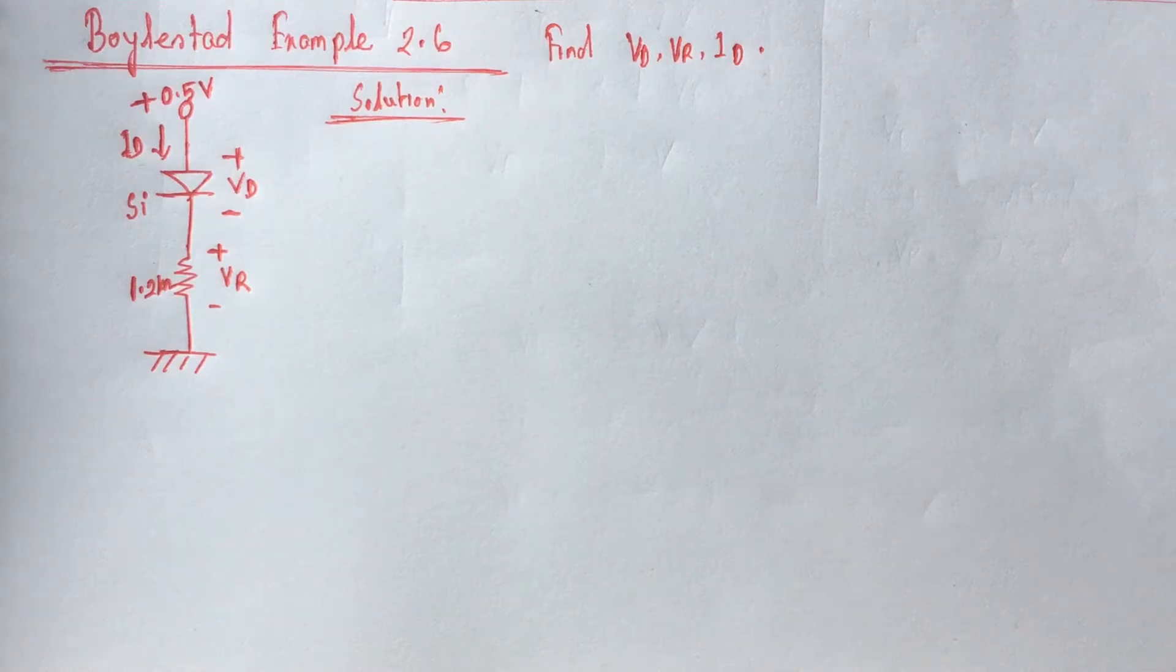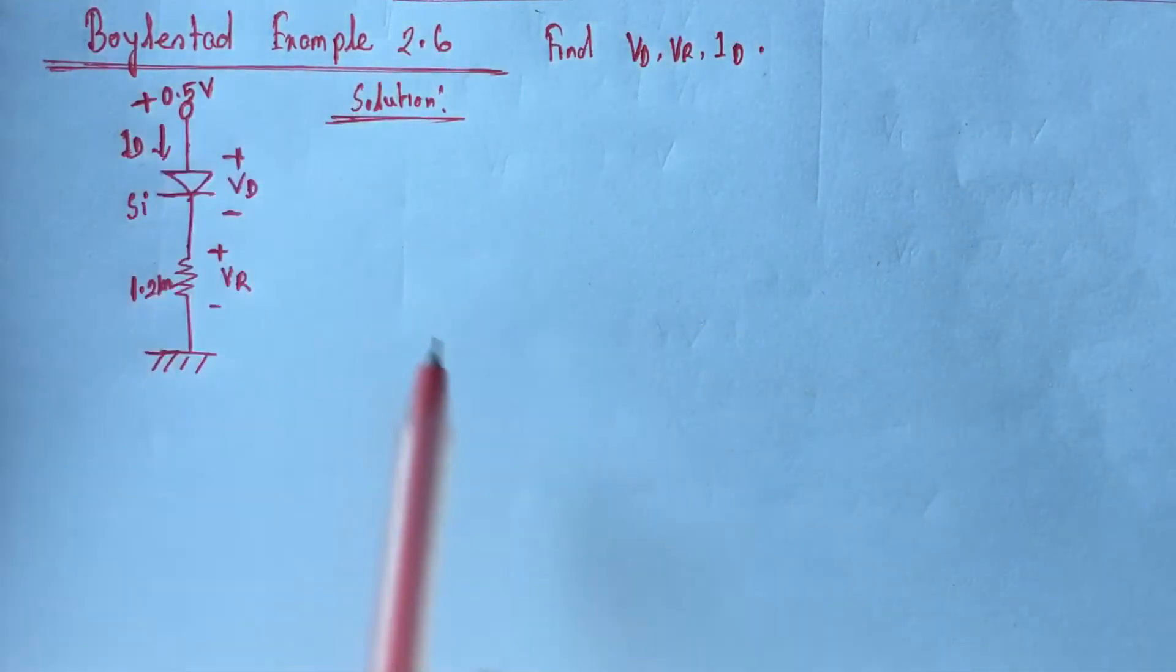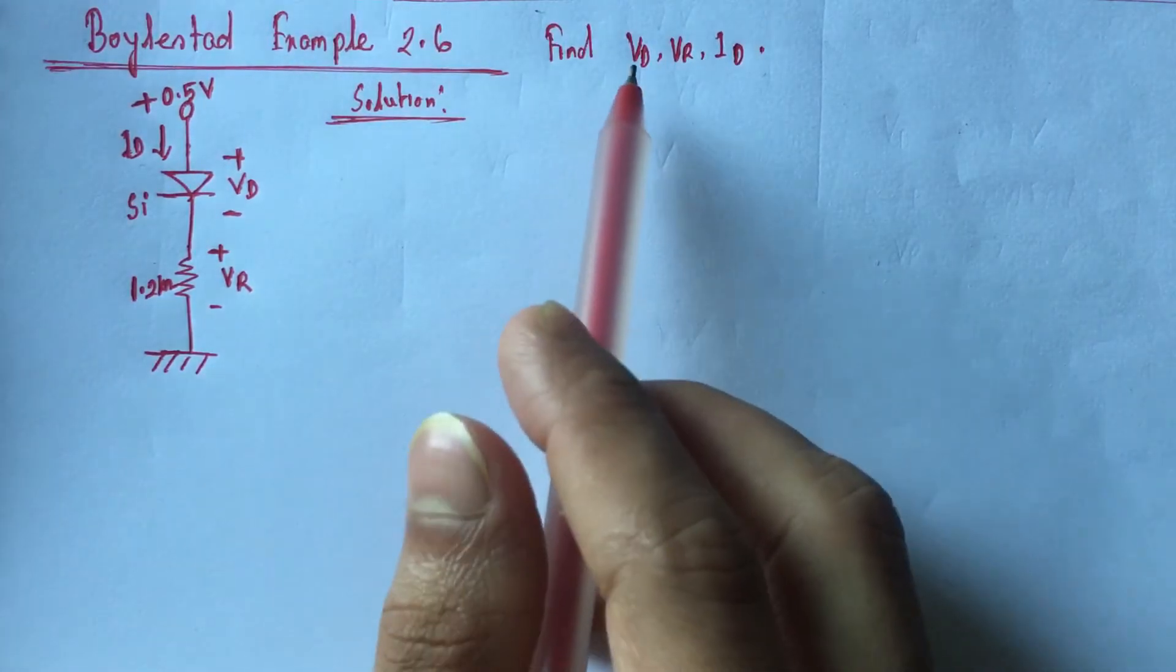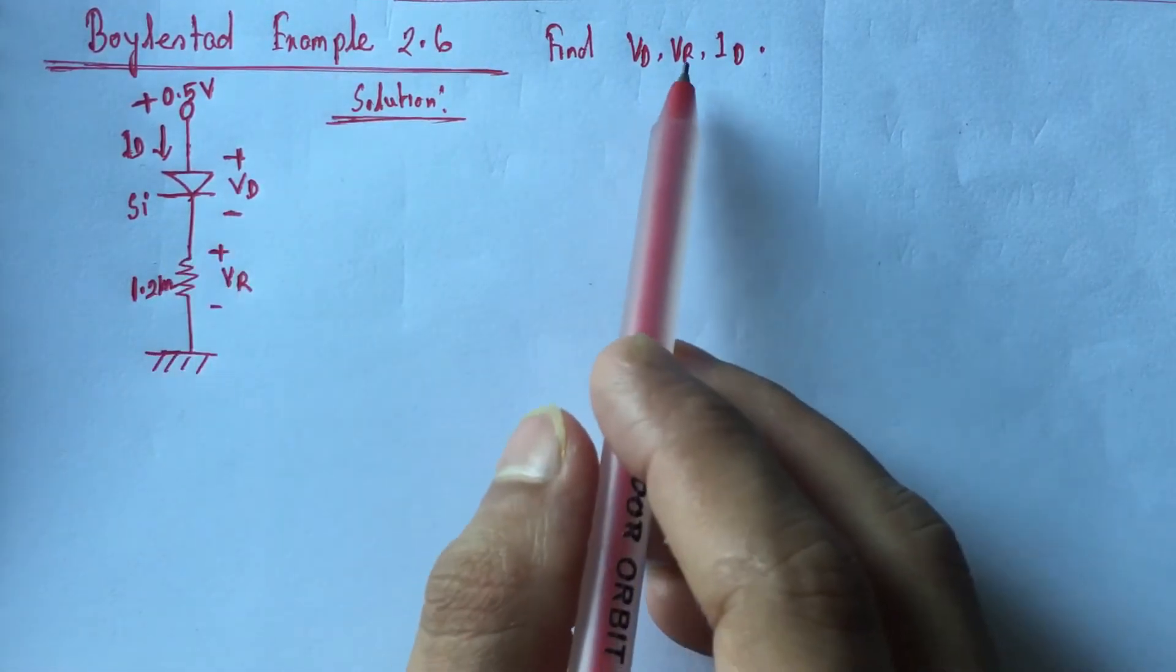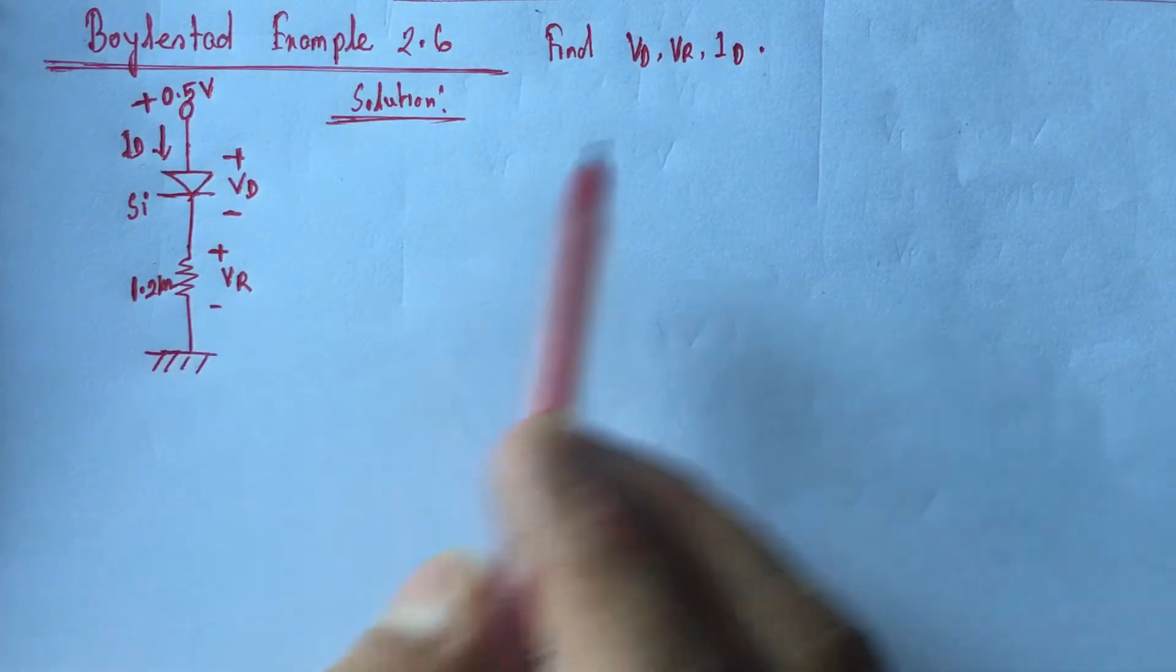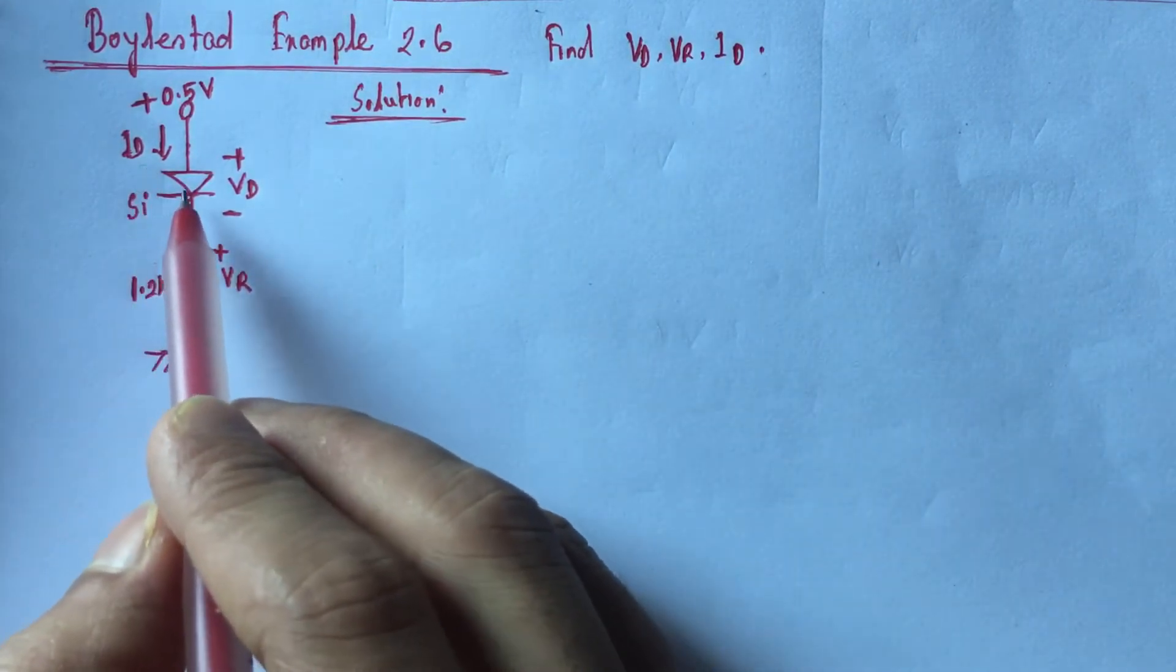Hi viewers, today we will solve example 2.6 from Boylestad. This is a diode-related problem where we have to identify the voltage VD across the silicon diode, voltage VR across resistance R, and current ID flowing through the diode.